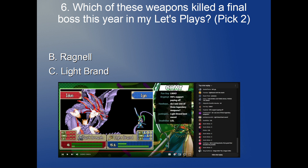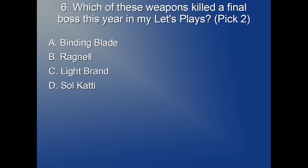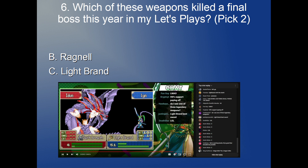The Light Brand is a bit of a weird one — that's from the Binding Blade let's play. The chat wanted me to kill the final boss with Lyn, so I put up a poll: kill with Lyn or with Roy? They chose Lyn, and the most humiliating way was the Light Brand — just 10 damage exactly, which is actually less than she usually did in that playthrough because she was very good. Could have been the Soul Katti or the Binding Blade, but chat made their choice. It was a really fun project — putting Lyn in the Binding Blade to see how well she worked out.